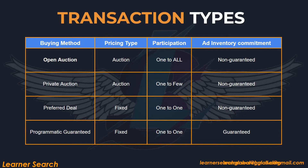Programmatically, DSPs purchase inventory from exchanges through various buying methods: open auction, private deal, preferred deal, and programmatic guaranteed. Private and preferred deals can both be called PMPs (private marketplaces). These transaction types have been explained in detail in previous videos.